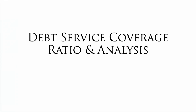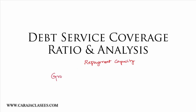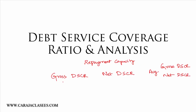Let's move on to debt service coverage ratio and its analysis. The debt service coverage ratio is a ratio which measures the repayment capacity of the borrower. Within debt service coverage ratio itself, we have almost four types: gross DSCR, net DSCR, average of gross DSCR, and average of net DSCR.